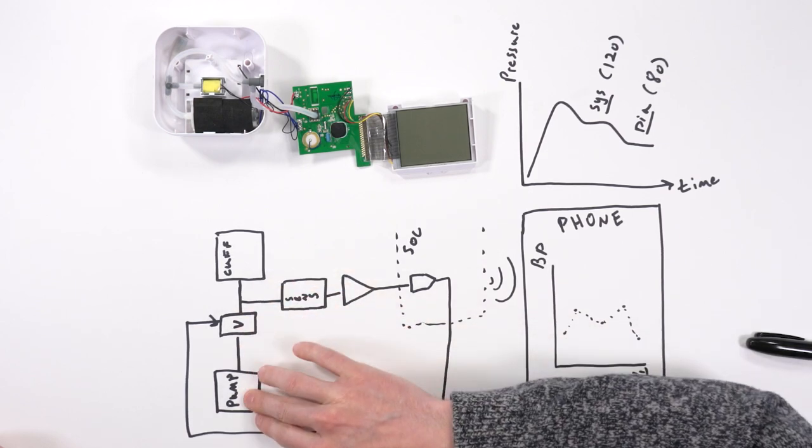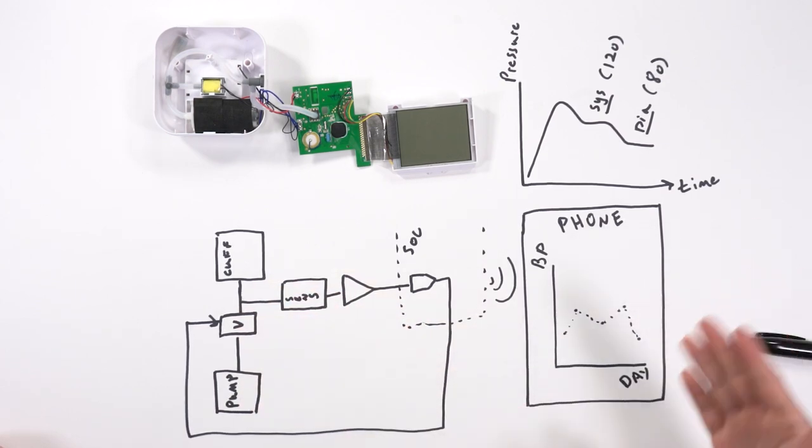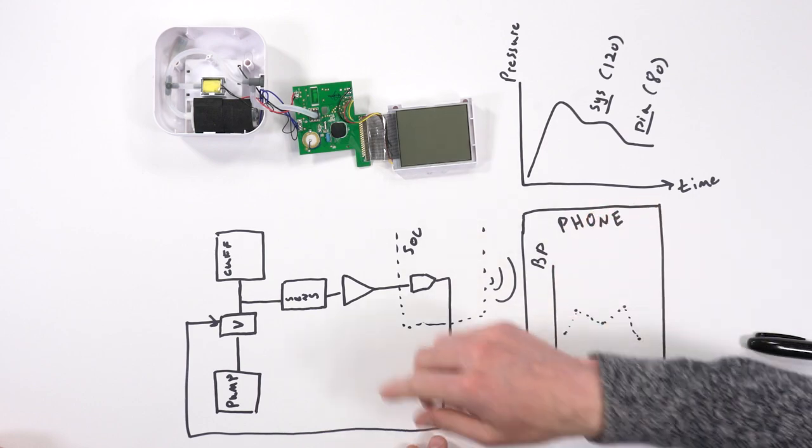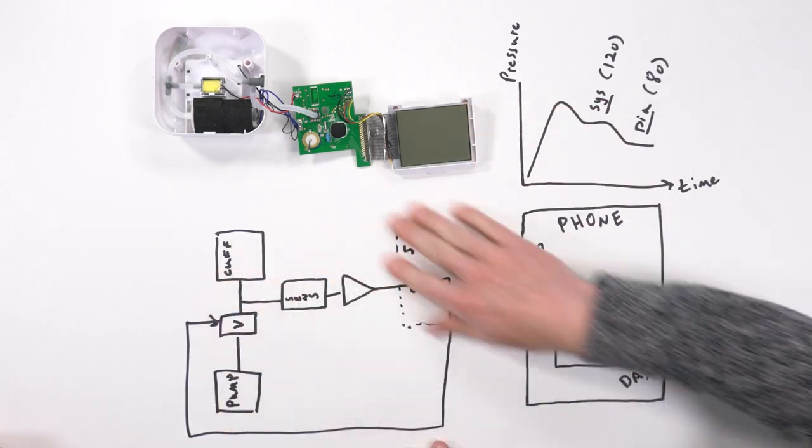And then on the other side of the valve is the pump that's actually pumping the air into the cuff to close off your blood. So here we show the overall system.